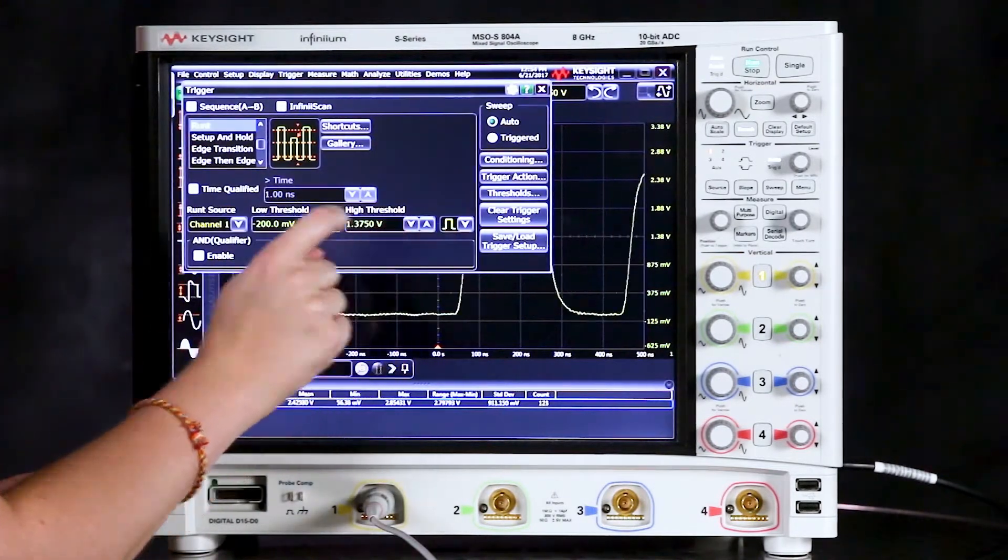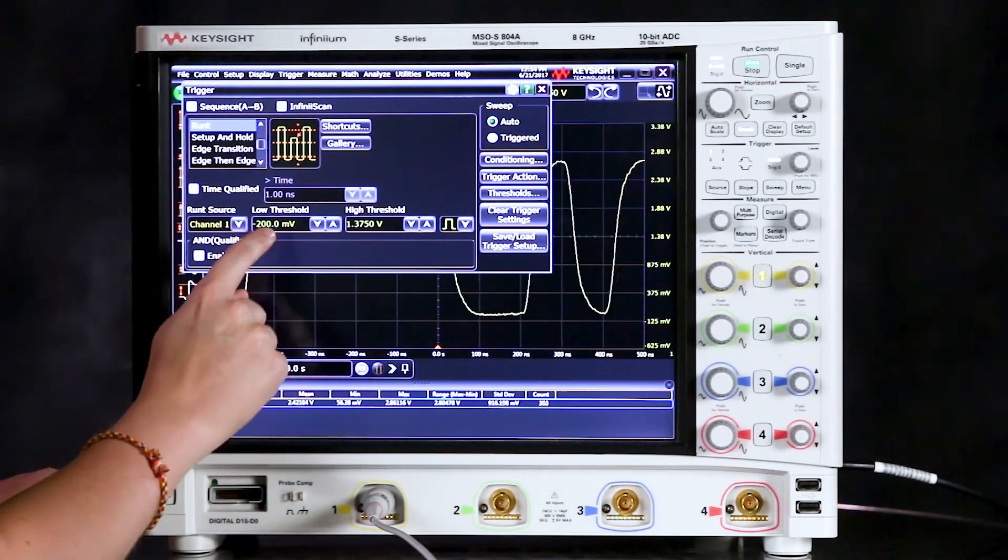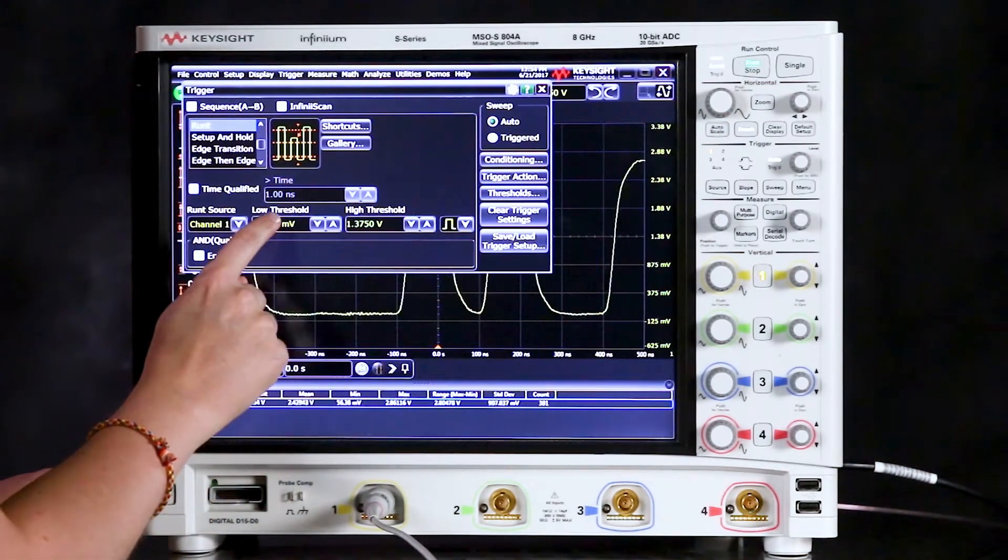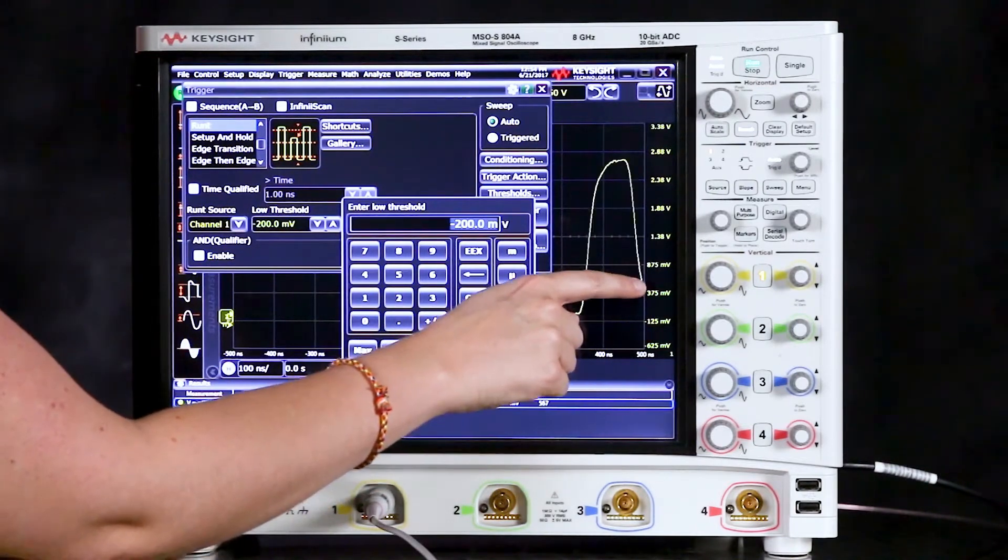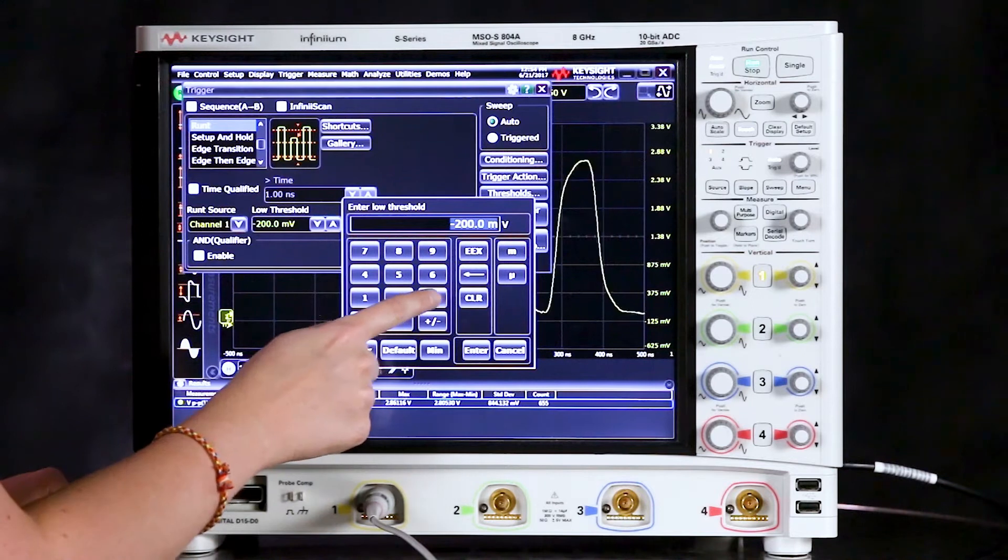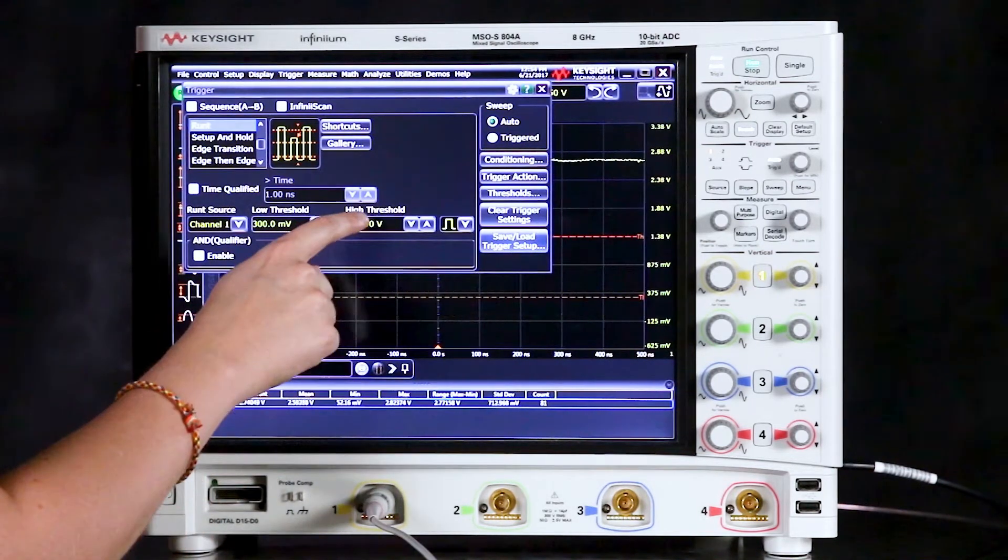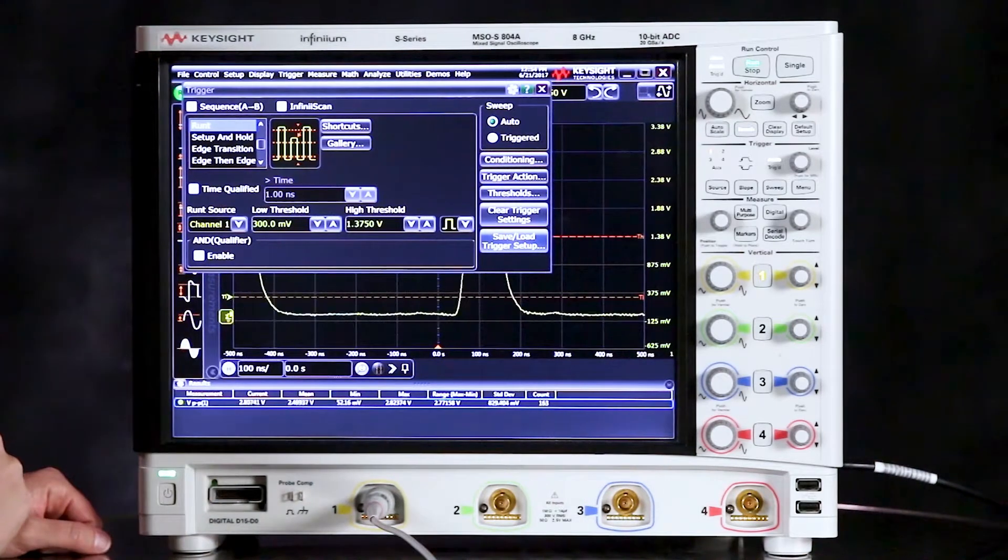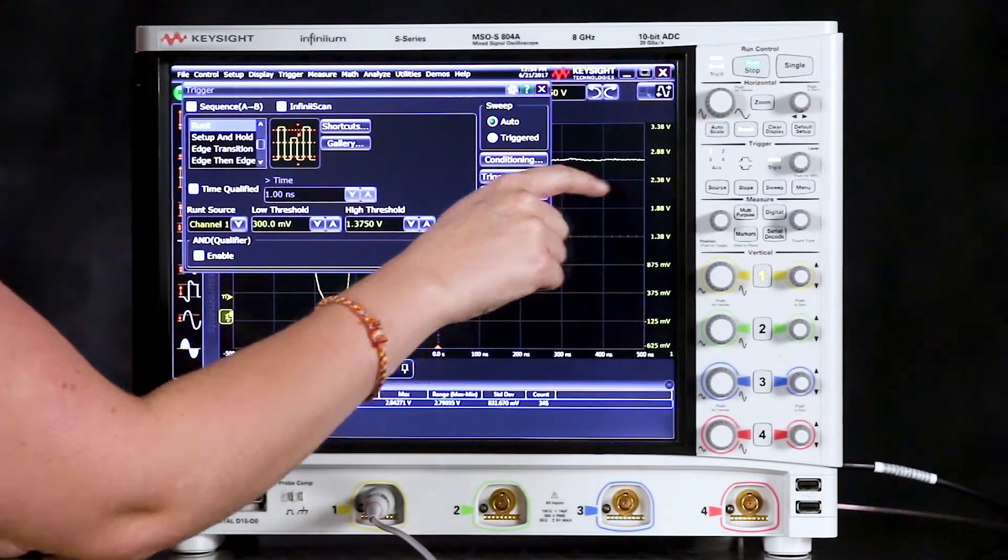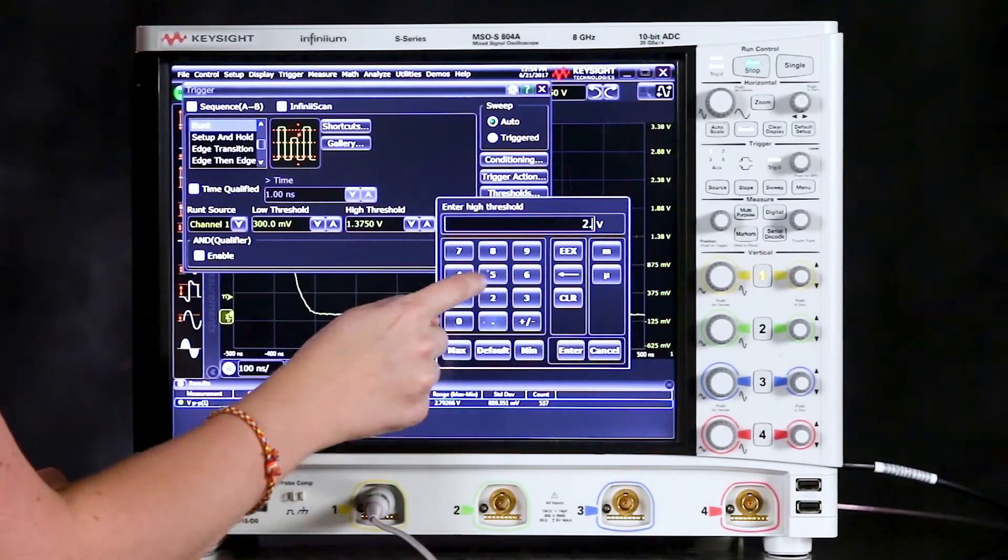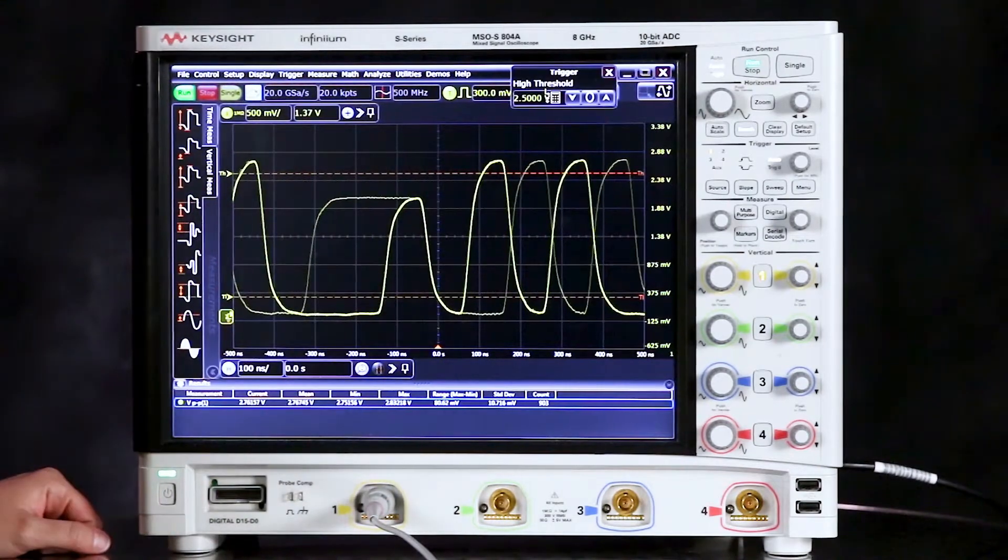It looks like a rising edge runt and the source is channel 1 and we want the low threshold to cross the waveform. So let's set that between negative 125 millivolts and 375 millivolts. I'll choose 300 millivolts. We want the high threshold to be above the runt and we said we thought it looked like it was between 1.88 volts and 2.38 volts so let's just set it for 2.5 to be sure we're above the runt. And it looks like we're capturing those runts.